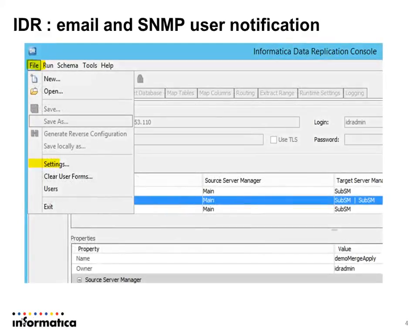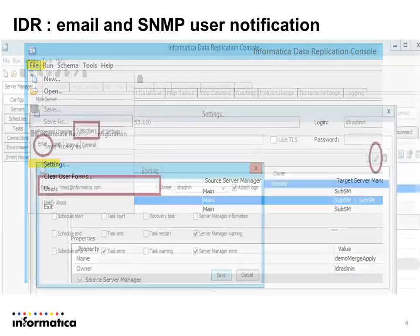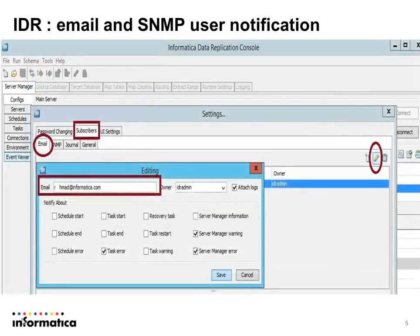Let's see how to set it. Click on File, go to Settings, and the Settings dialog box will appear. Click on the Subscribers tab, then click on the Email sub-tab.